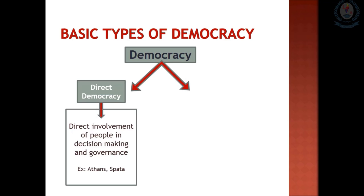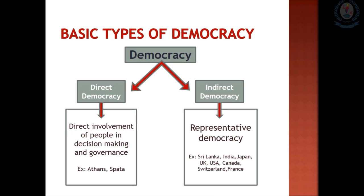The second type is indirect democracy, also known as representative democracy. As it was difficult to implement direct democracy, indirect democracy began. Governing done by public representatives is a feature of indirect democracy. Public representatives are elected by elections held from time to time.